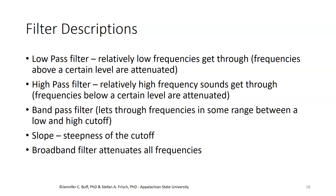The slope of a filter is how steep that cutoff is — the transition from frequencies that are let through to frequencies that are attenuated can be more gradual or it can be steeper. The term broadband filter is used for something that would attenuate all frequencies, such as passive noise-canceling headphones with ear cups over your ears, which would just quiet all frequencies to some degree.